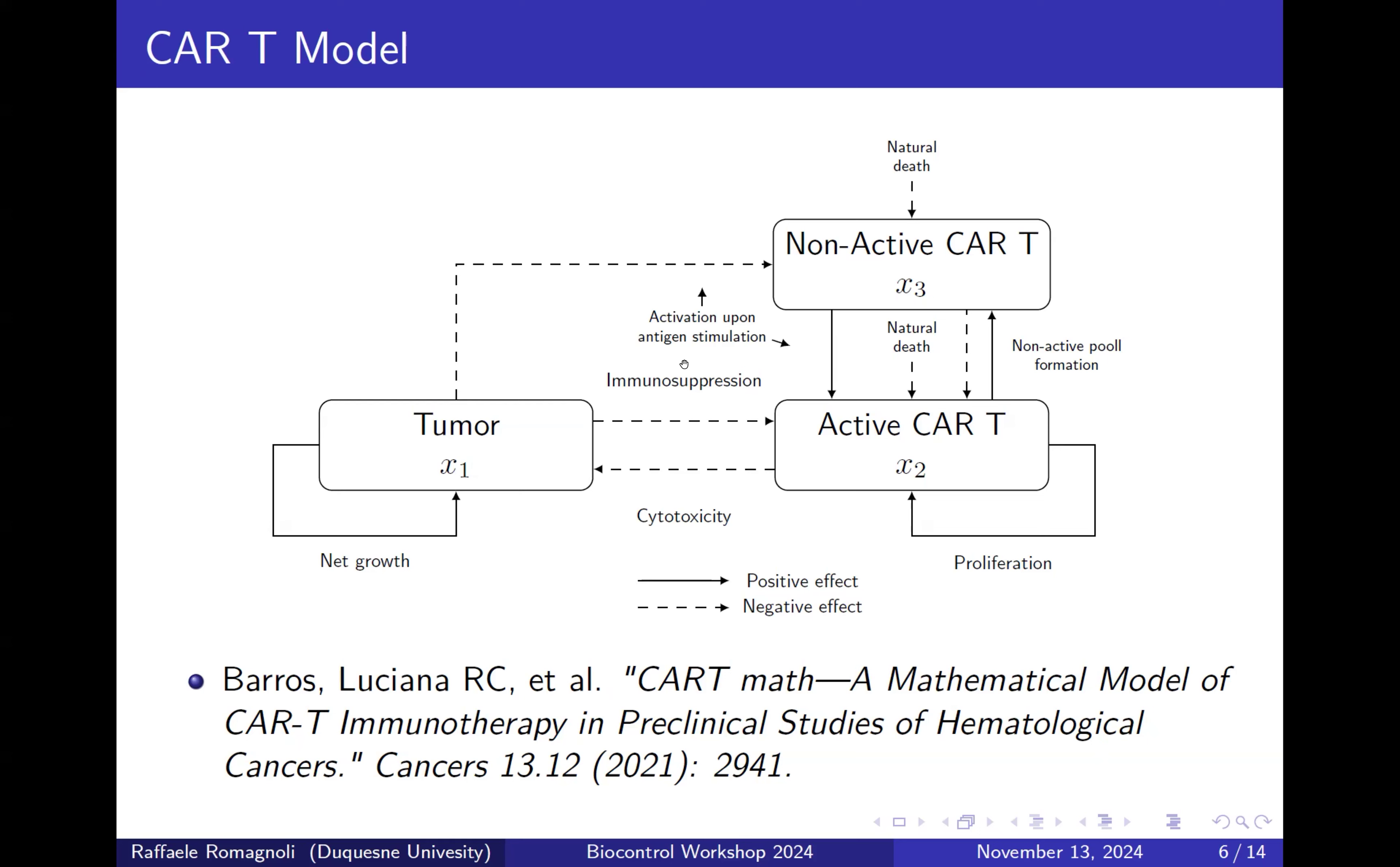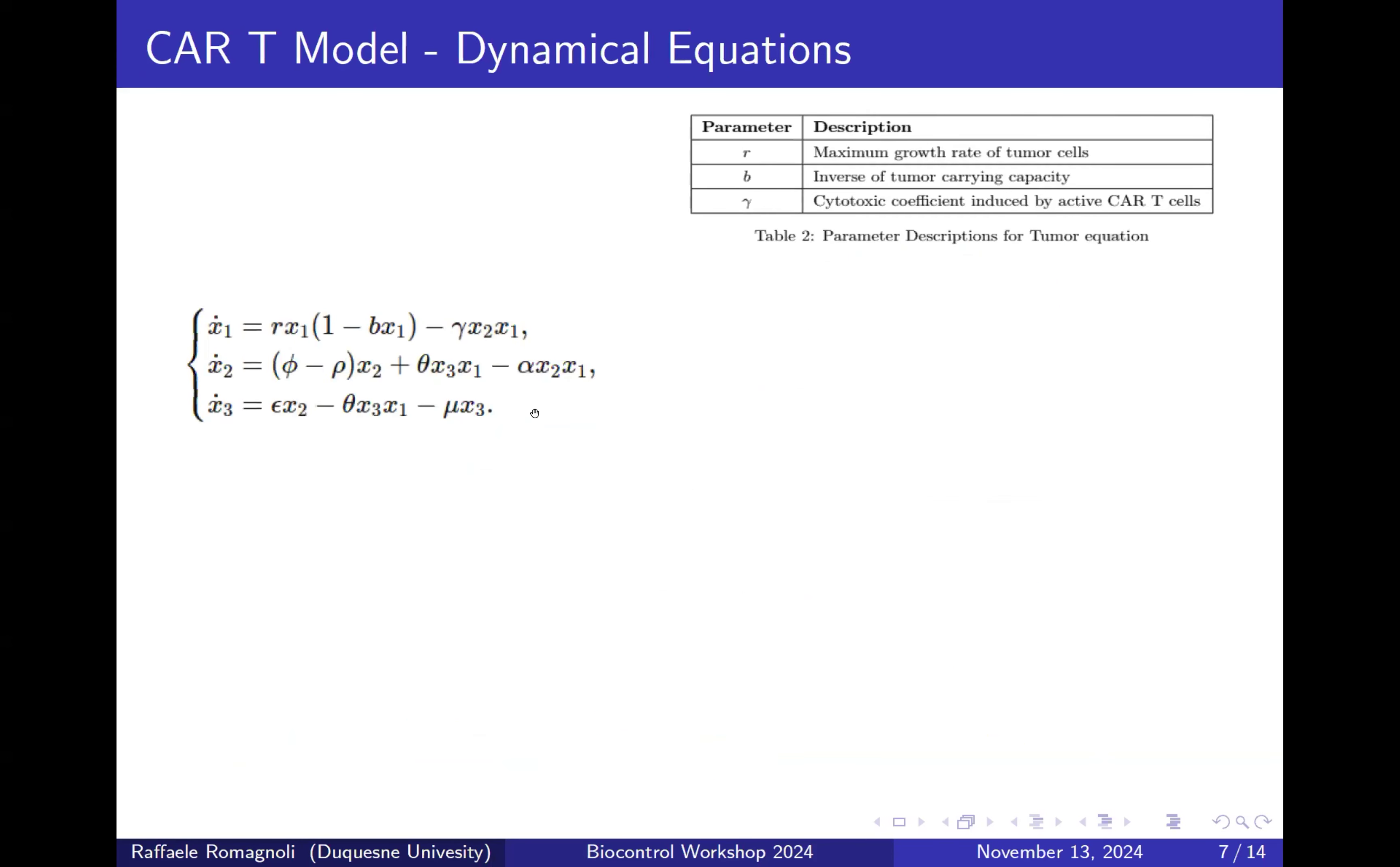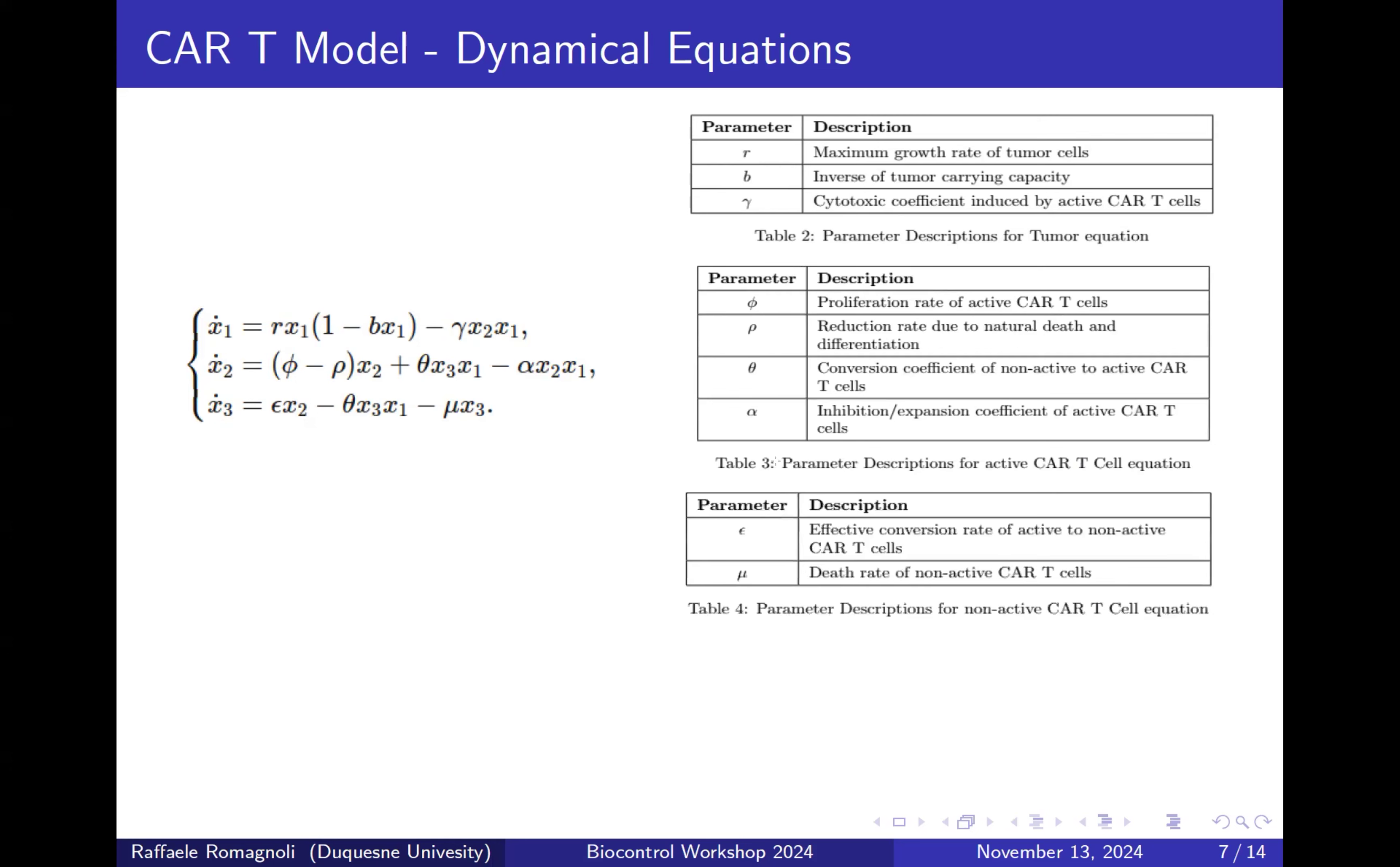We have this particular scheme that is translated in this set of three differential equations. So the first one, X1, represents the tumor where R is the tumor growth rate, and this model represents that there is a maximum number of cells that can be achieved. Gamma represents the cytotoxic coefficient that represents the reduction factor of the tumor cell due to the presence of active CAR-T cell. X2 represents the model of active CAR-T cells and X3 represents the non-active CAR-T cell.